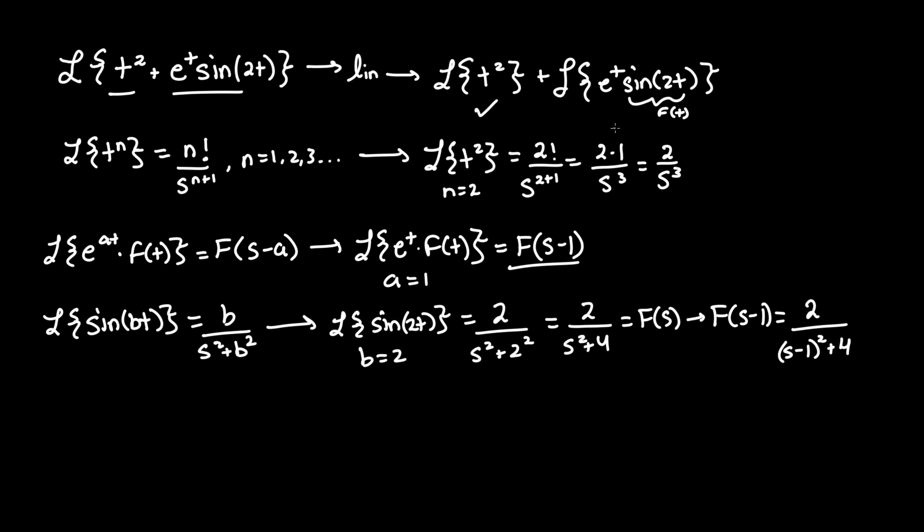And keep the plus 4 the same. And now we have our two terms. And don't forget the first one, we have to add them together for our solution. That means that the Laplace of this entire expression becomes 2 over s cubed, plus our F of s minus 1 term. 2 over s minus 1 squared plus 4. And that's our answer.